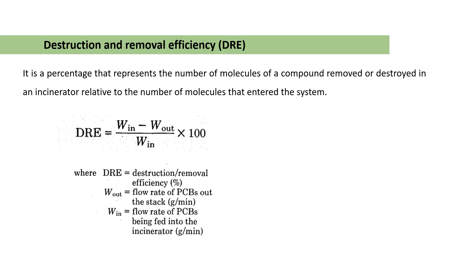The next one is the destruction and removal efficiency (DRE), which is related to the incinerator process. It represents the number of molecules of a compound removed or destroyed in an incinerator relative to the number of molecules that enter the system. DRE = (W_in − W_out) / W_in × 100. This value is expressed as a percentage. W_out is the flow rate of toxic pollutants such as PCBs (polychlorinated biphenyls) in the stack gases, and W_in is the flow rate of PCBs fed into the incinerator.